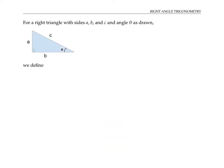For a right triangle with sides of length a, b, and c and an angle theta as drawn, we define sine of theta as the length of the opposite side over the hypotenuse. The side opposite to our angle theta has measure a and the hypotenuse has measure c, so that would be a over c for this triangle.